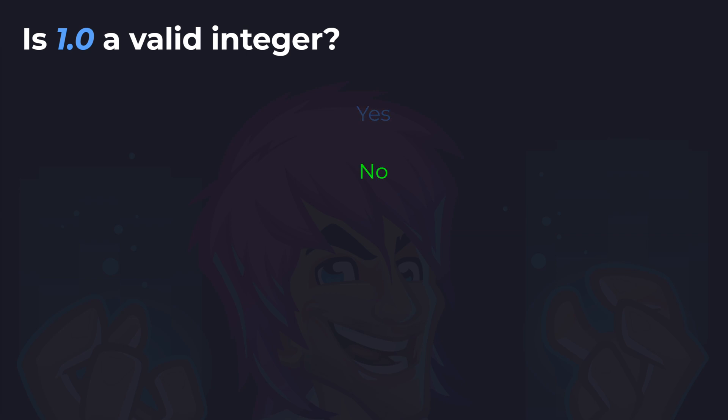A whole number 1 is a valid integer, and technically 1.0 is a whole number. However, because we've placed the decimal point and created a floating point number — a fractional number — this isn't actually a valid integer. Just because we have specified a whole number, the way we specified it with a dot has turned it into a floating point number. So this is not a valid integer.